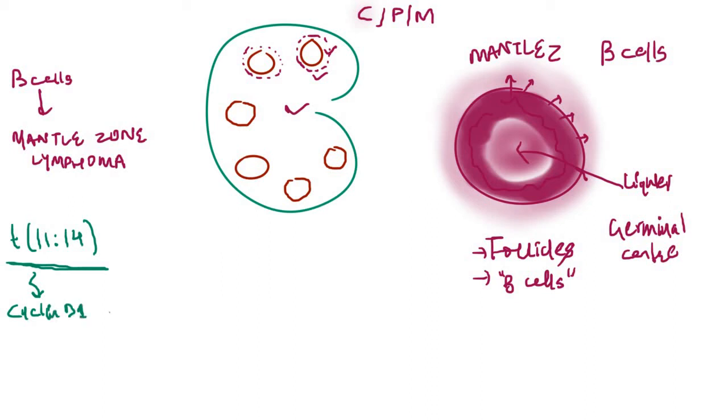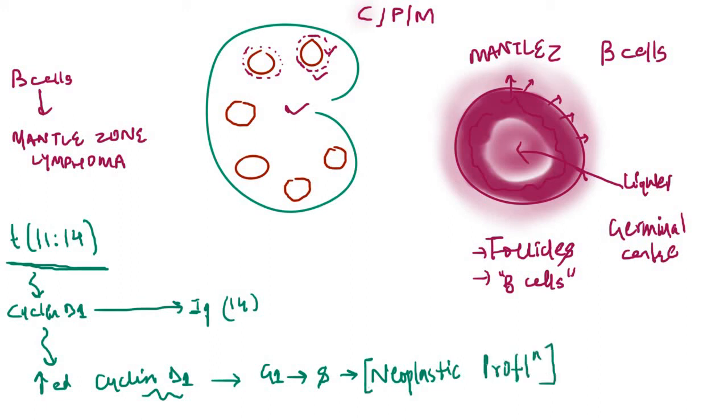As a result of the mutation, the cyclin D1 gene moves to the Ig heavy chain locus on the 14th chromosome, resulting in increased expression of cyclin D1. Cyclin D1 is a cell cycle regulator protein. Increased cyclin D1 production causes increased transition of cells from G1 to S phase, leading to rapid cell division and neoplastic proliferation.